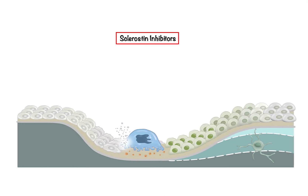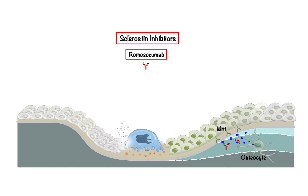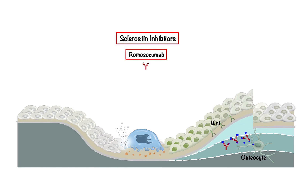Lastly, we'll discuss sclerostin inhibitors, an innovative class of osteoporosis medications which includes romosozumab, a type of monoclonal antibody. As touched upon during the bone remodeling overview, sclerostin is a protein released by osteocytes that acts as a suppressor of bone formation by blocking the Wnt signaling pathway in osteoblasts. Sclerostin inhibitors, such as romosozumab, work by specifically targeting and binding to sclerostin, effectively neutralizing its inhibitory effect on the Wnt signaling pathway. With the elimination of this blockage, the Wnt pathway can function unimpeded, leading to increased osteoblast differentiation, proliferation, and activity. This boost in osteoblast activity results in an accelerated rate of bone formation which exceeds the rate of bone resorption, contributing to higher bone mineral density and a lower likelihood of fractures for individuals suffering from osteoporosis.